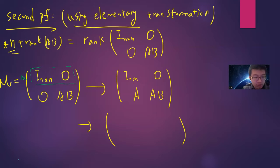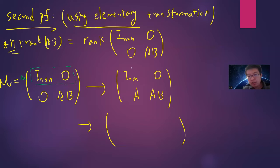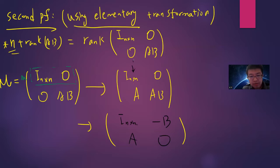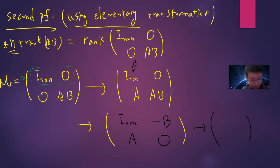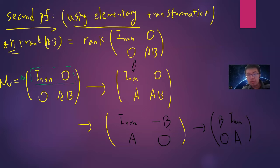Next, we want to cancel the A in the lower-left. We can multiply the second column by −B and add it to the second column to cancel AB. So the matrix transforms step by step: multiply B, add minus one times to the second column. Then, with a simple transpose or flip of blocks, we get [B, 0; A, 0] or equivalently a matrix whose rank bounds rank(A) + rank(B).